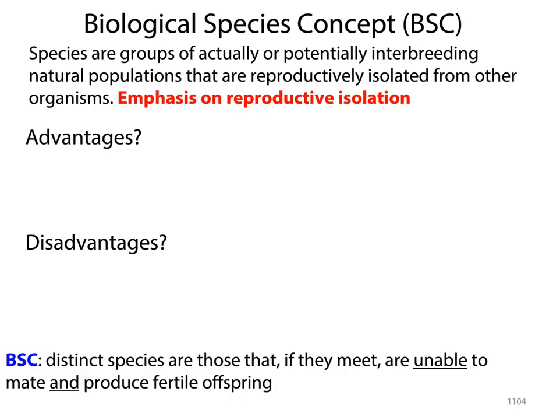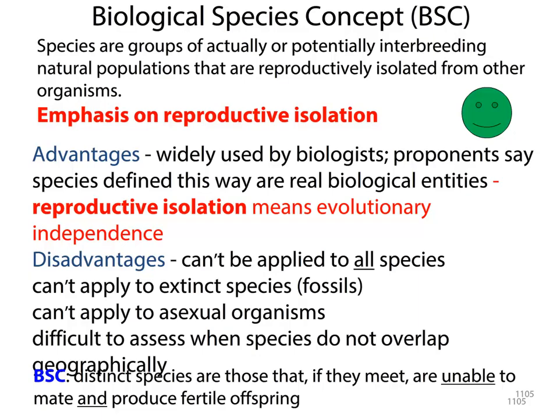The typical species concept that most biologists use is known as the biological species concept (BSC), where species are defined as groups of actually or potentially interbreeding natural populations that are reproductively isolated from one another. The emphasis is on reproductive isolation. I want you to stop lecture, take a moment, and write some advantages and disadvantages for using this concept. Some advantages of using the BSC are that it's widely used by biologists — proponents say that when you define species this way, they're real biological entities, and reproductive isolation means evolutionary independence.